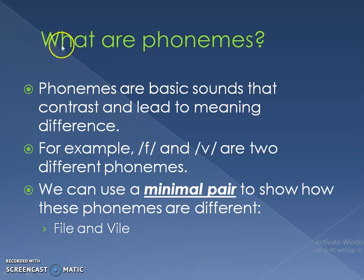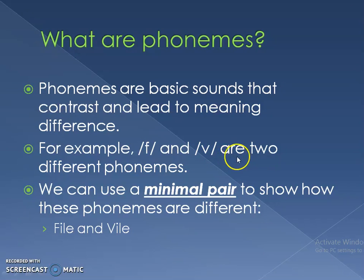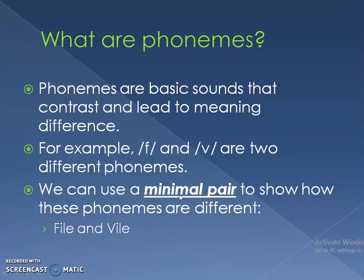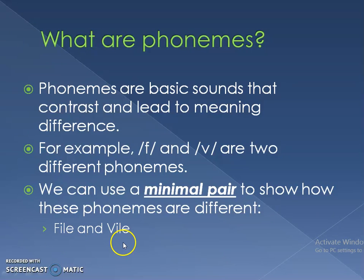So what are phonemes? Phonemes are basic sounds that contrast and lead to meaning difference. For example, F and V are two different phonemes. We can use a minimal pair to show how these phonemes are different. A minimal pair is the use of two words that are identical in every part except for the two phonemes we want to differentiate. For example, in the word 'file' and the word 'vile', we're differentiating the two phonemes F and V. These two words are different in meaning, so F and V are two different phonemes.